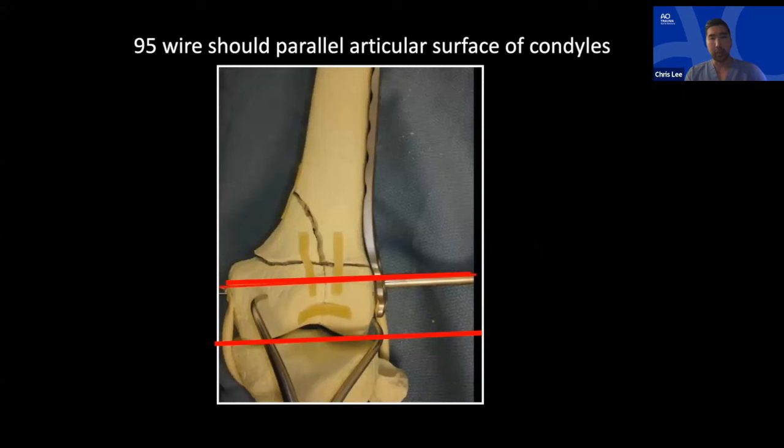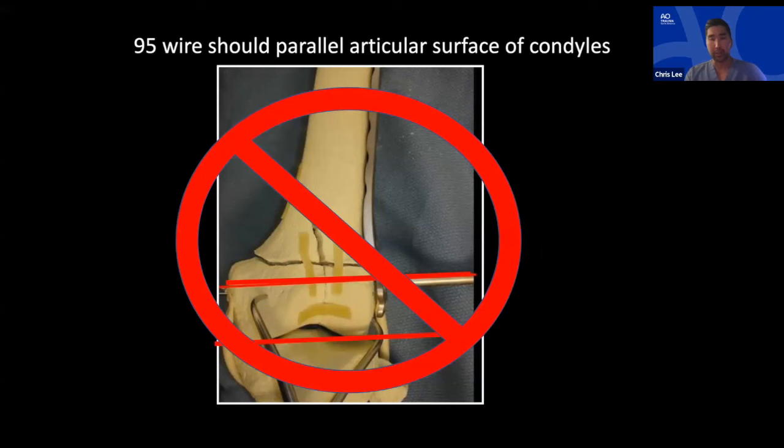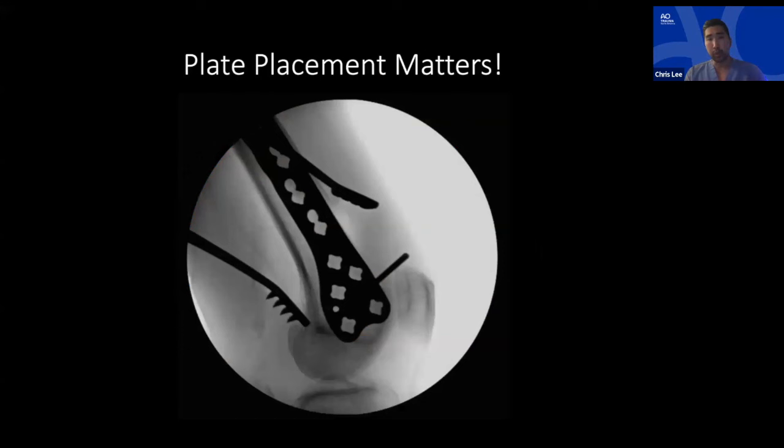When dual plating: I tend to apply the lateral plate first, though some apply the medial plate first to gain alignment and mechanical axis. The classic technique taught to residents — driving a 95-degree wire parallel to the articular block — is incredibly difficult to execute precisely on fluoroscopy and makes plate application challenging. I've moved almost entirely to doing the entire lateral plate application guided off the lateral view, looking at the AP last.